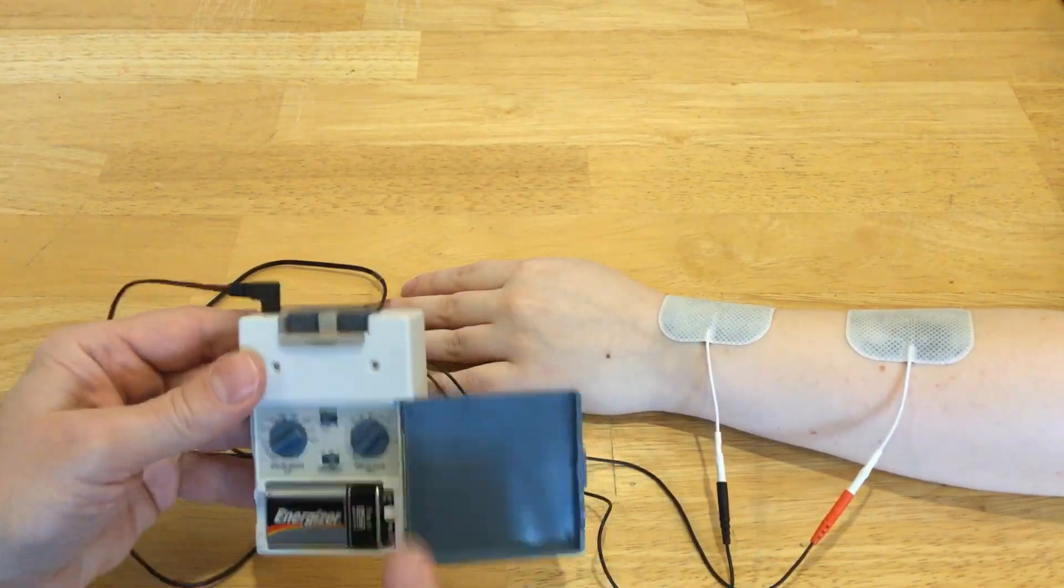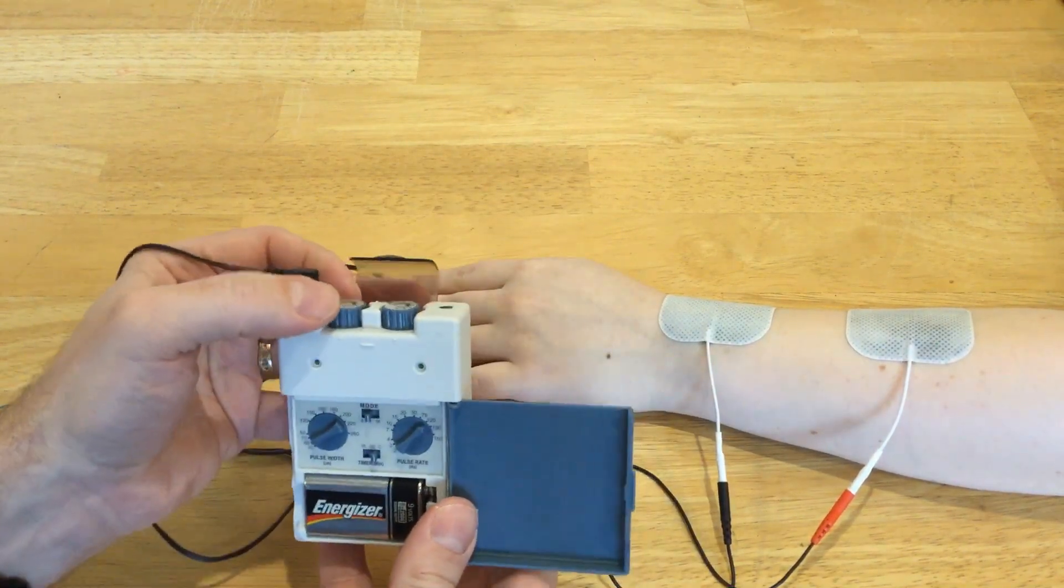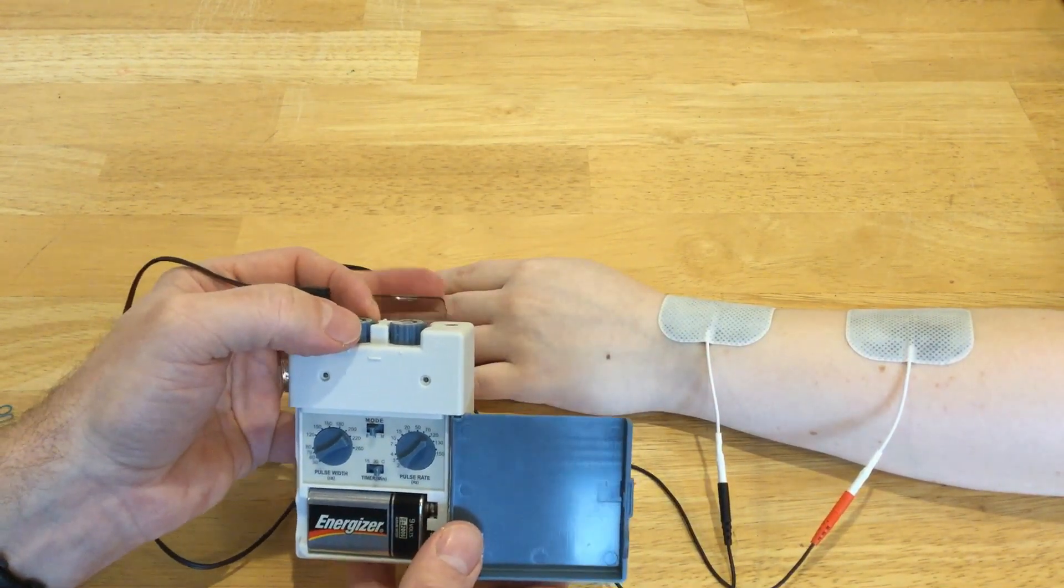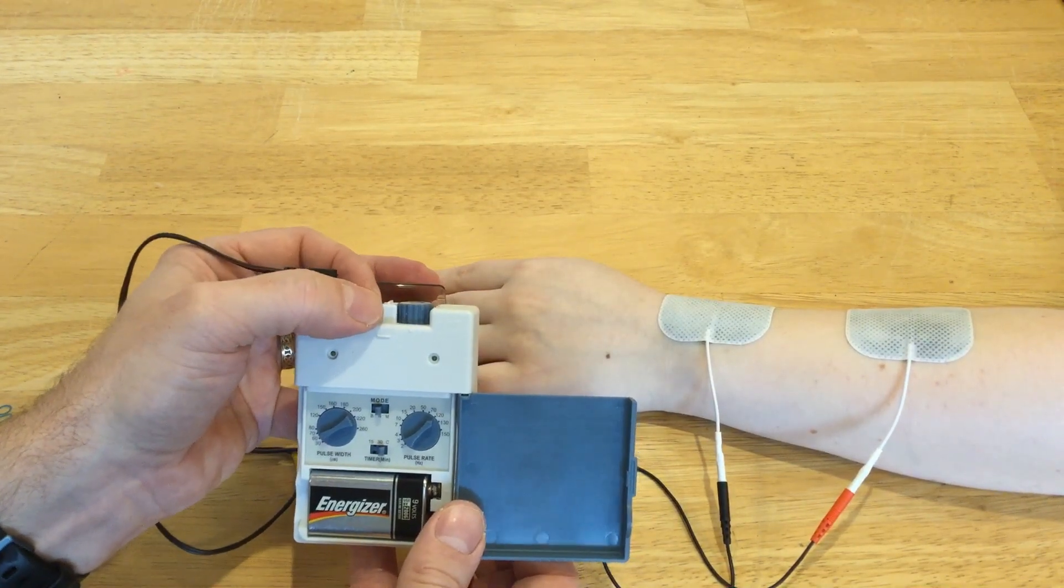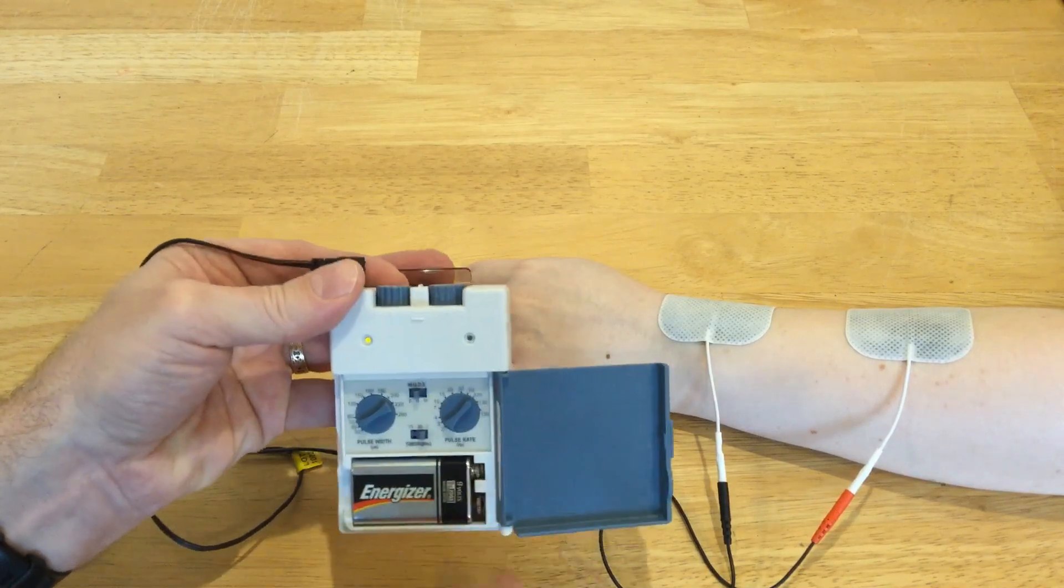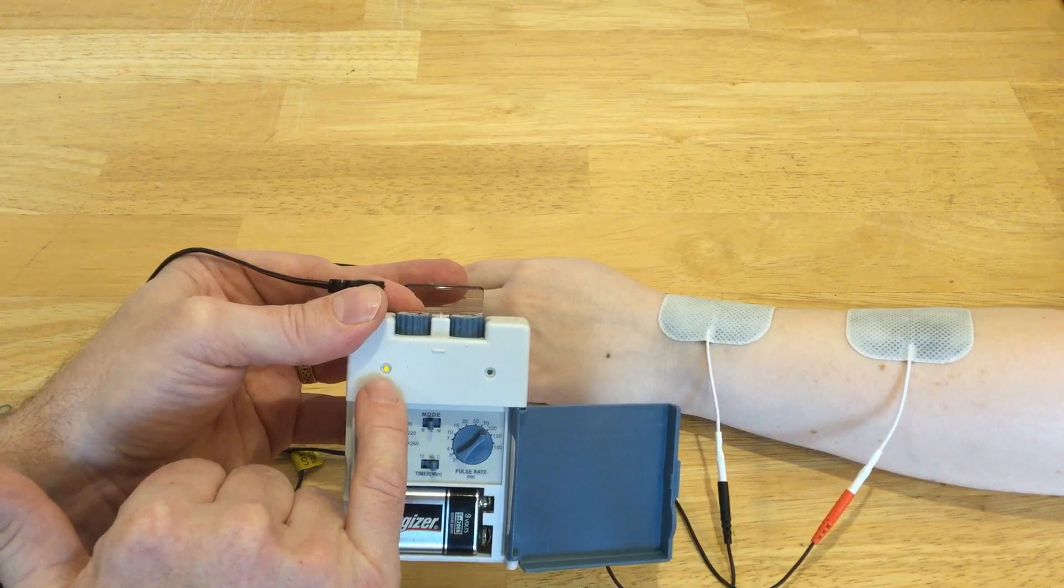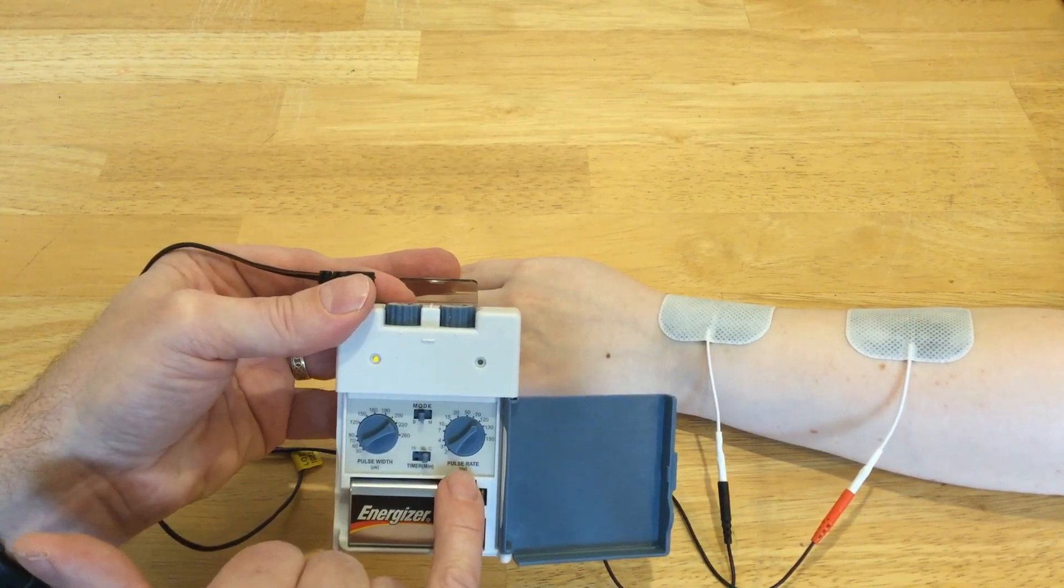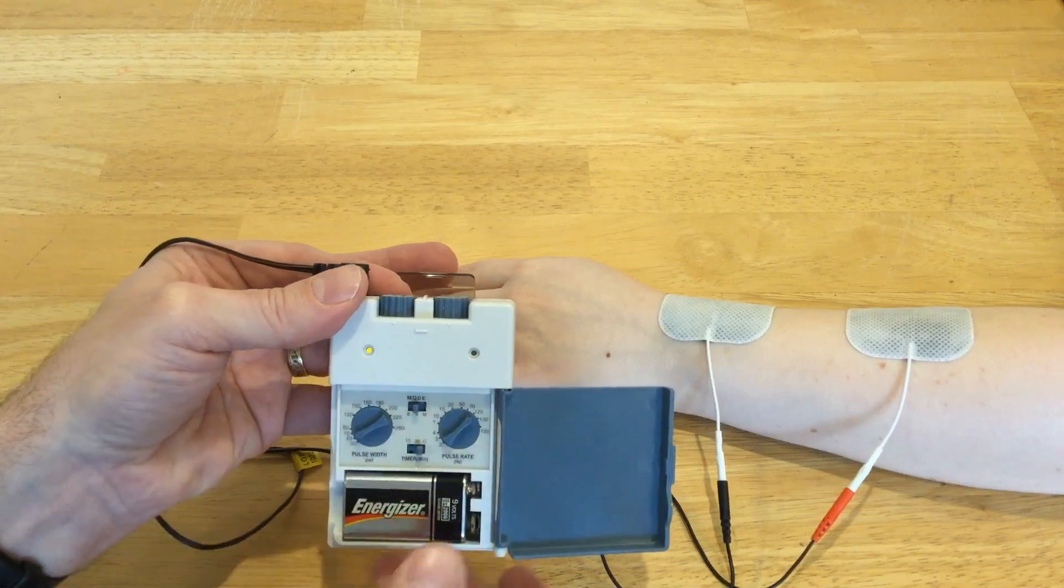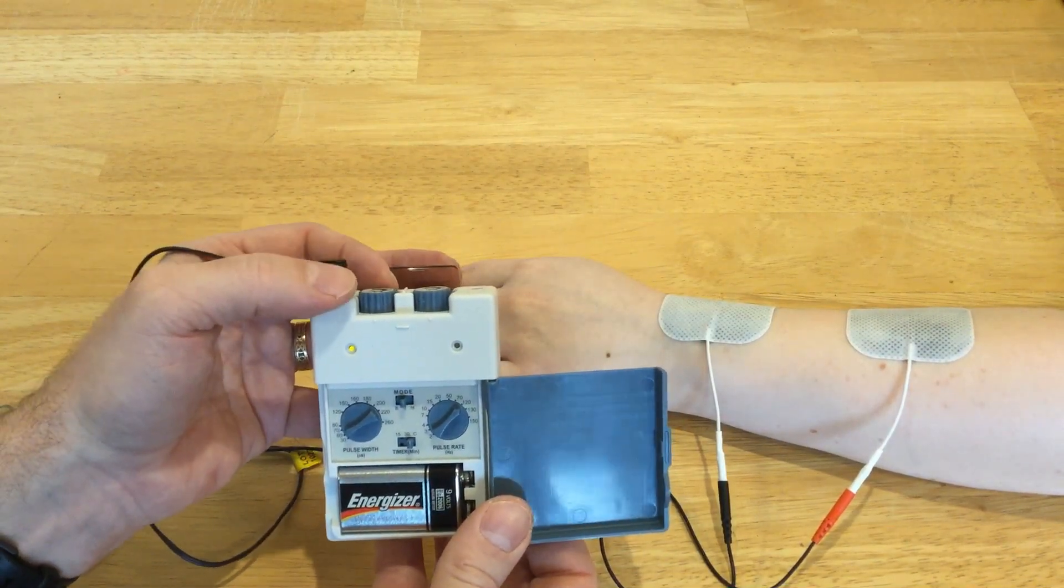Now what I'm going to do is turn it on by turning the dial and then slowly turn it up. My client will simply tell me when she first feels anything at all. You'll notice that when I turn it on, the little LED indicator goes on. And that actually flashes according to the pulse frequency or pulse rate. Since the pulse rate is 120, it looks like it's continuous, but it's actually flashing 120 times a second.